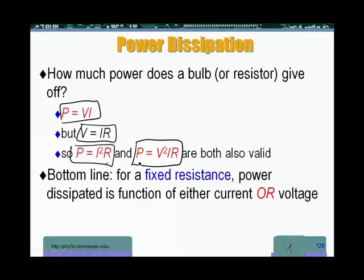Either one of these is the same expression as the top one. What's the benefit of having these expressions written differently? The benefit is, if we have the same current, we can find the power due to different resistors very easily this way, without having to calculate the voltage every time.